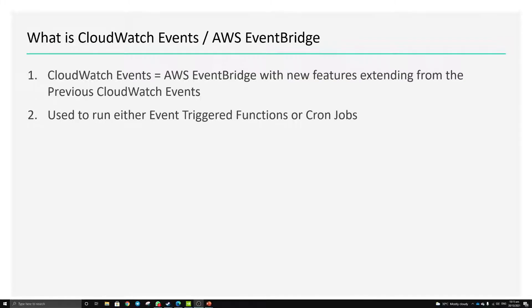So what is AWS CloudWatch Events? In our previous video, we mentioned that we are using CloudWatch to trigger a Lambda function, but the way we did it was through a cron job method — you schedule a particular time, and every time it reaches that period it will trigger.